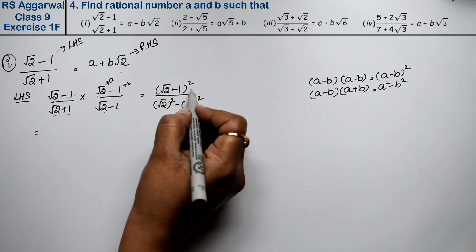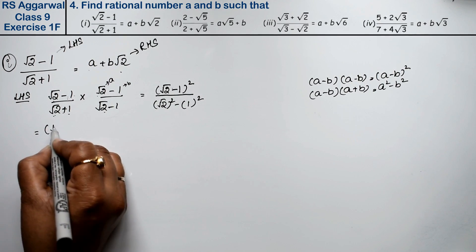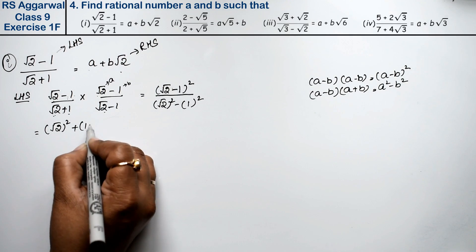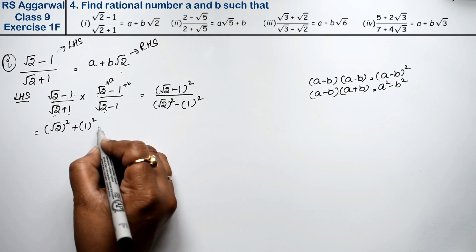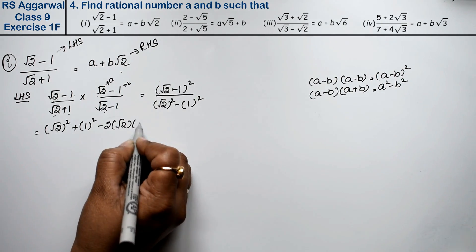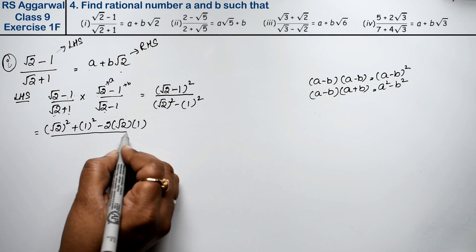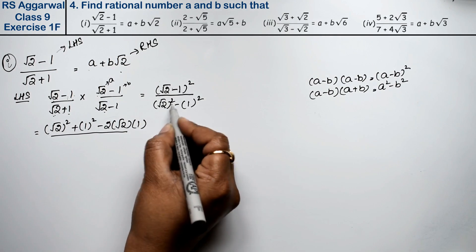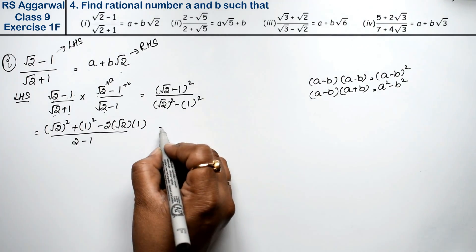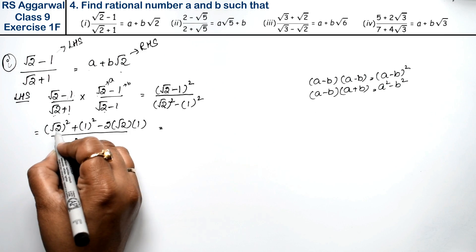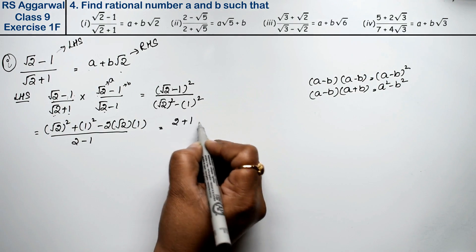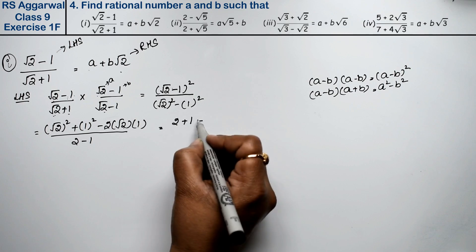The numerator uses the (A minus B) whole square formula: A squared plus B squared minus 2AB. Applying it: root 2 squared is 2, 1 squared is 1, so we get 2 plus 1 minus 2 root 2.